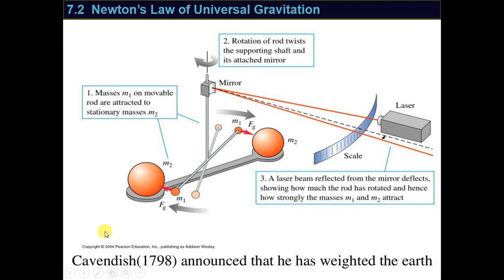What is the Cavendish experiment? The physicist Cavendish, in 1798, did an experiment in order to find the value for the universal constant. What is the universal constant? It is G, the uppercase G. You remember in the equation of universal gravitation, gravitational force FG is equal to G, which is a constant number, times the mass of the first object times the mass of the second object divided by the distance between them squared. So this G is a universal constant.